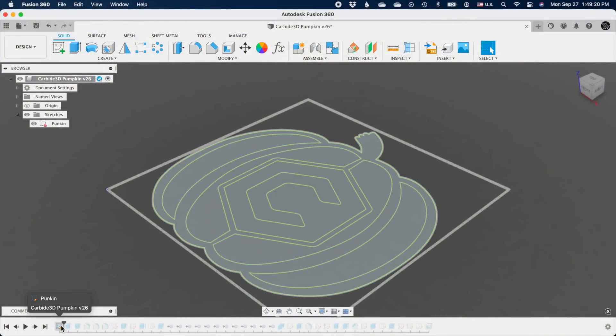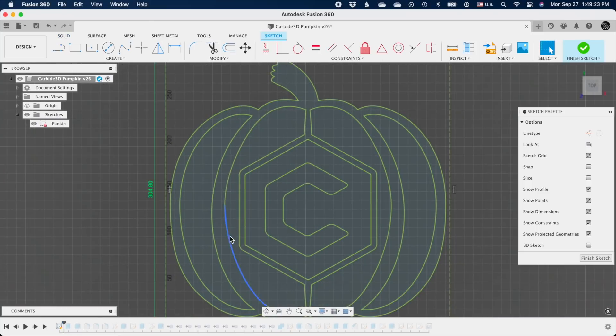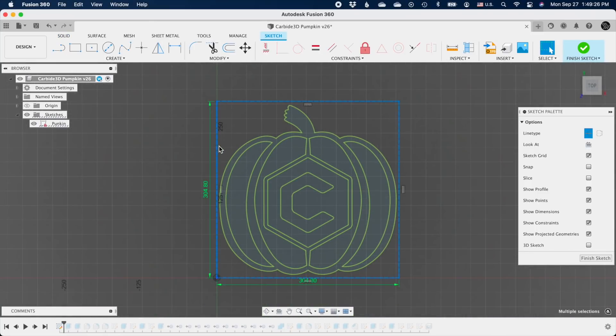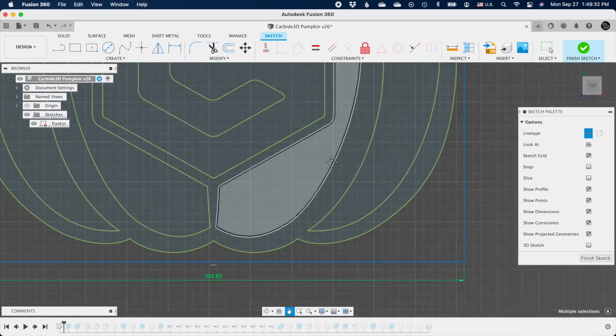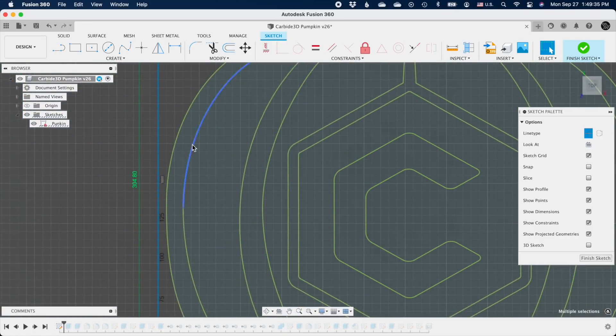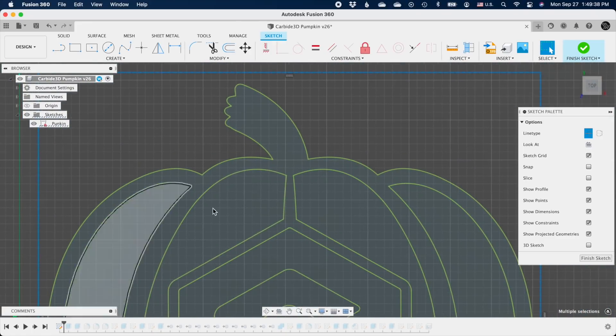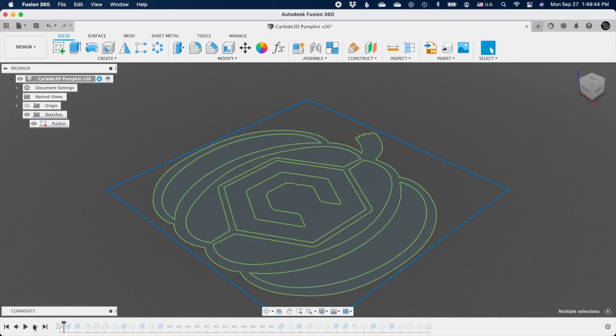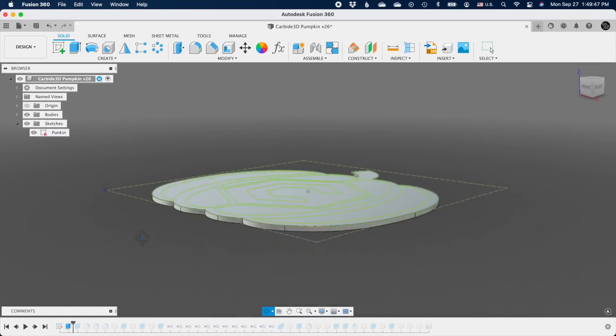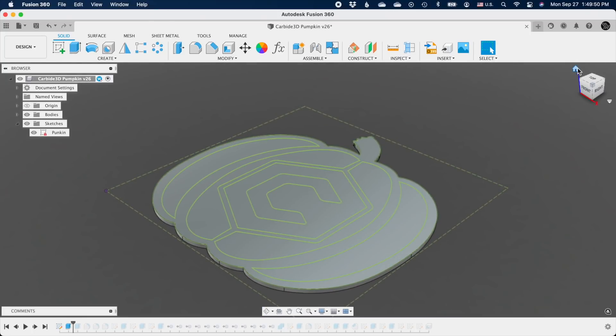Every project begins with a design, and this is the pumpkin vector I have to start with. I'm going to bring it into Fusion 360 and scale it to the size I want. I'm going to be cutting this design out of a 12x12 inch plate of aluminum, so the design has to fit within those borders. Next, I'll use the extrude tool to create both the overall pumpkin shape and the recessed areas I want in this design.